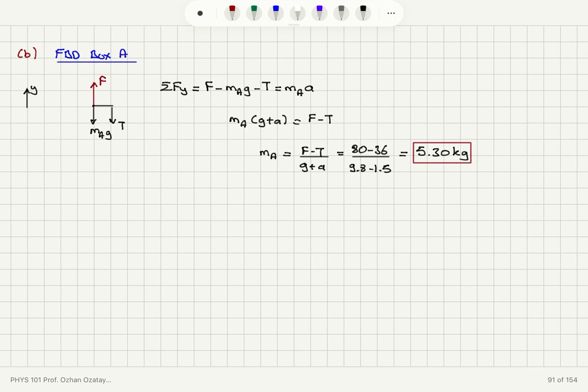And for box A, I have the external force F, the weight and the tension trying to pull it down. So writing the net force on the y-axis F minus mAg minus T, this must be equal to mass of box A times the common acceleration a. And from this equation, I can get a mass of box A to be 5.30 kilograms.